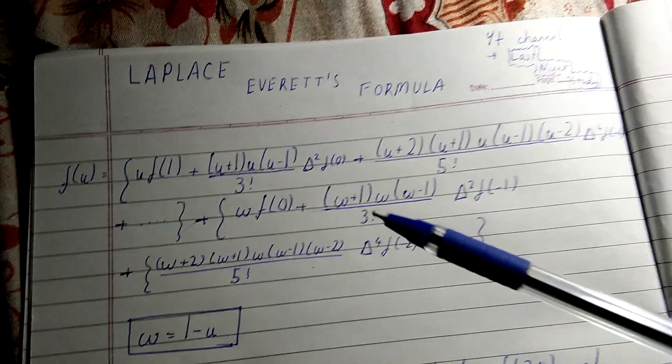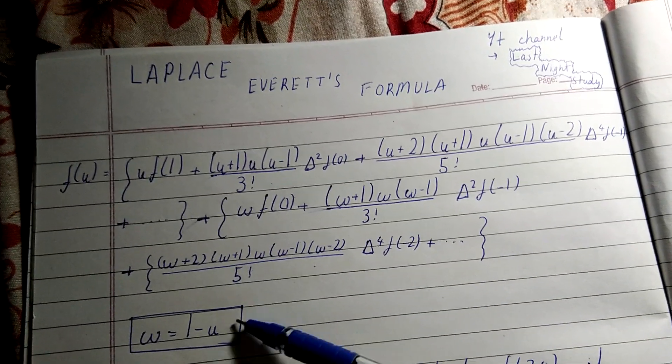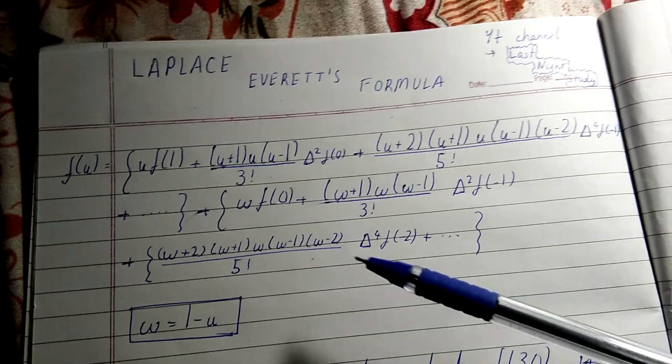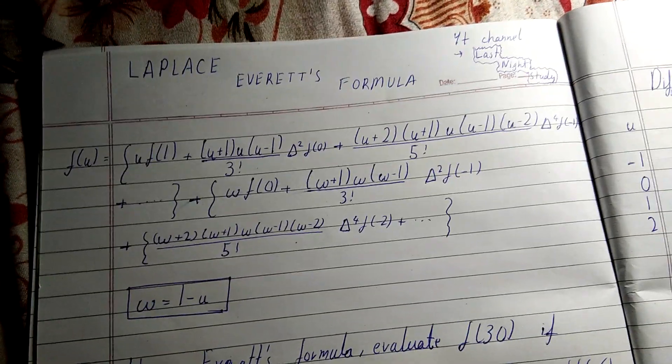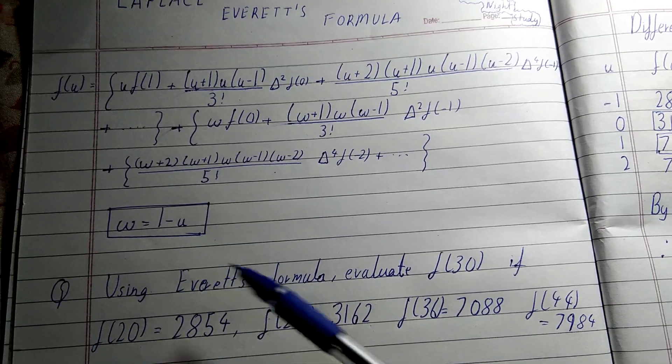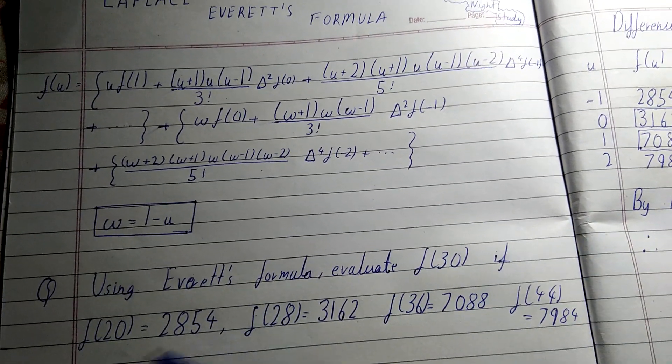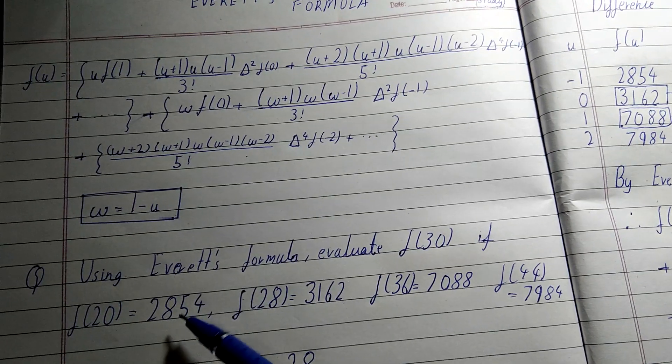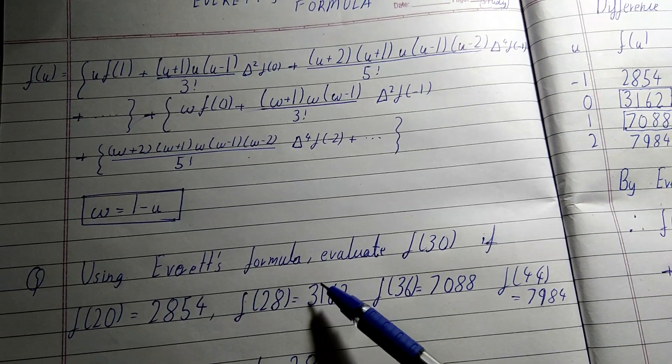Using Everett's formula, evaluate f(30) if f(20) = 2854, f(28) = 3162...